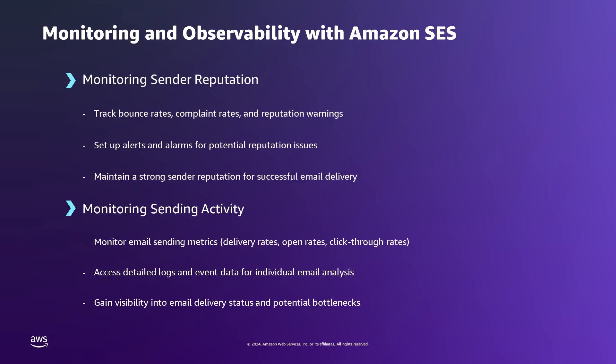Sending activity in Amazon SES refers to the metrics and data related to your email sending operations, like sending statistics, delivery status, bounces, rejects, and complaints. Monitoring sending activity helps to understand the volume and success rate of your email campaigns.